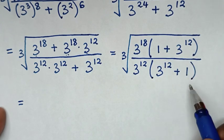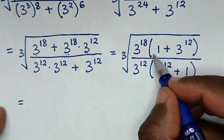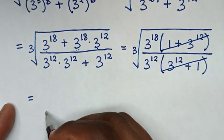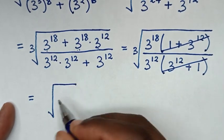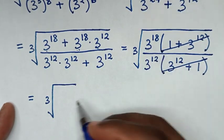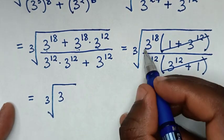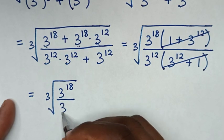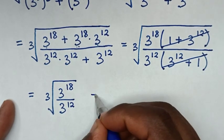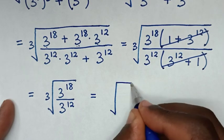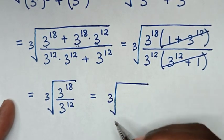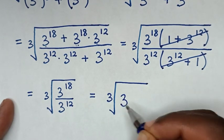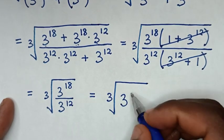Then it will be equal to: inside the bracket 1 plus 3 power of 12 divided by 1 plus 3 power of 12 — they are the same, so this and this will cancel. So it will be cube root of 3 power of 18 over 3 power of 12. Then 3 power of 18 divided by 3 power of 12 is same base, so 3 power of 18 minus 12.